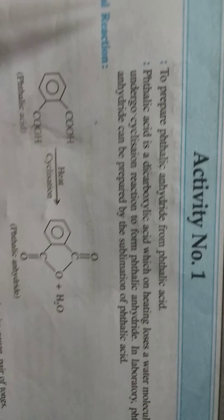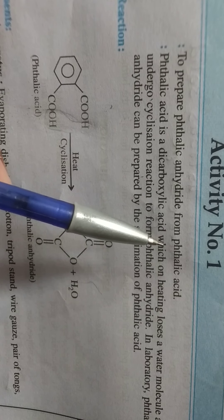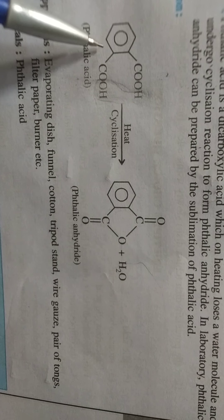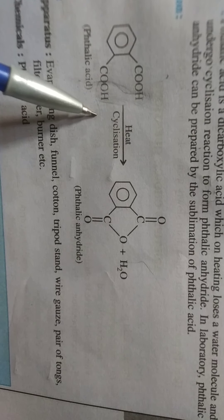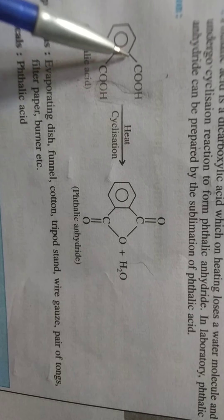In this activity our aim is to prepare phthalic anhydride from phthalic acid. Phthalic acid is the aromatic organic compound in which two carboxylic groups are attached to the benzene ring.